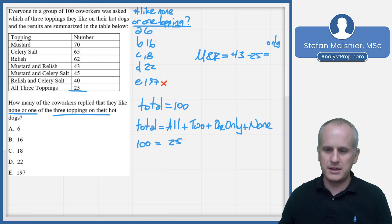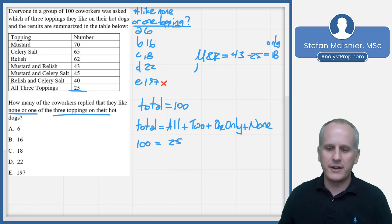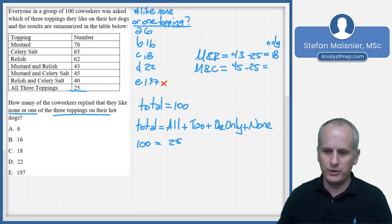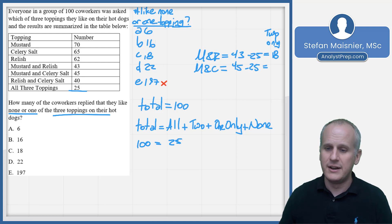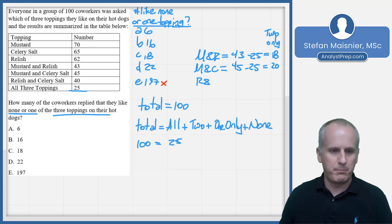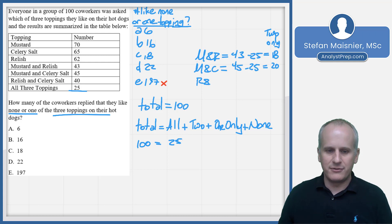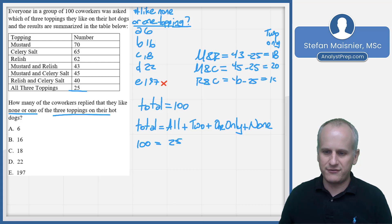So the only-mustard-and-relish is going to be 43 minus 25: 43 minus 20 is 23, 23 minus 5 is 18. Then mustard and celery salt is 45 minus the 25 included in all three, so exactly those two of mustard and celery salt are 20 people. And our last combination — relish and celery salt — is 40 minus 25, which gives us 15.